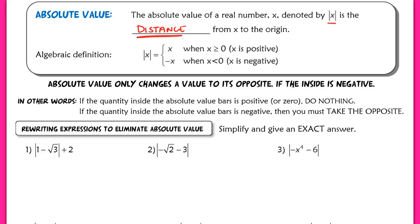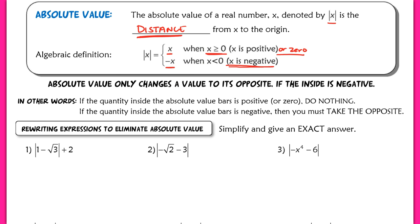We're also going to use the algebraic definition for absolute value, something we'll rely on all year. The absolute value of x is a function with two different cases. If x is greater than or equal to 0 — positive or zero — we do nothing with it; we leave it alone. However, if x is negative, we take the opposite of x.